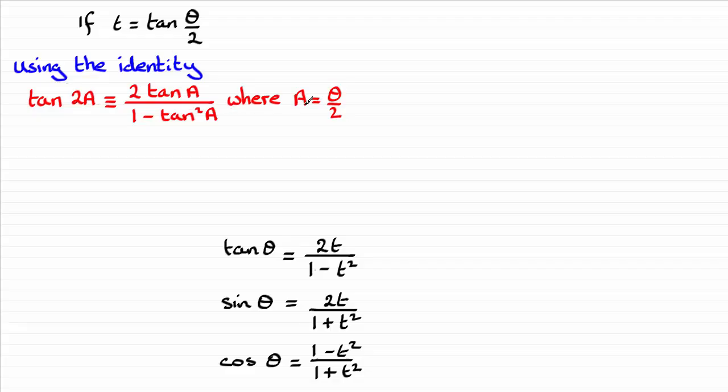Now if we let A equal theta upon 2, then 2A would clearly be theta. So we'd have tan theta is equal to 2tan theta upon 2 for 2tan A. And because it was all over 1 minus tan squared A, it would be now 1 minus tan squared theta upon 2.